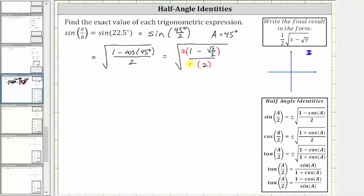This is equal to the square root of distributing the two here. We have two times one, which is two, and then we have minus two times square root two divided by two. We'll notice how the twos simplify out, giving us just square root two.